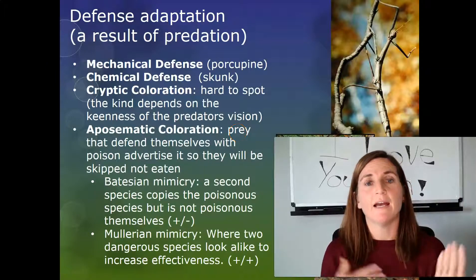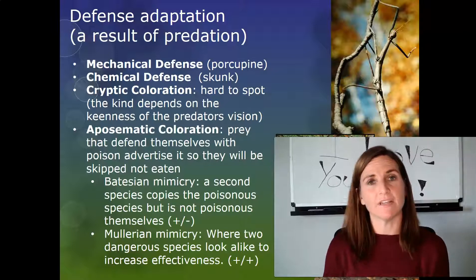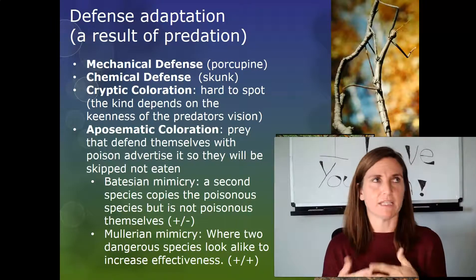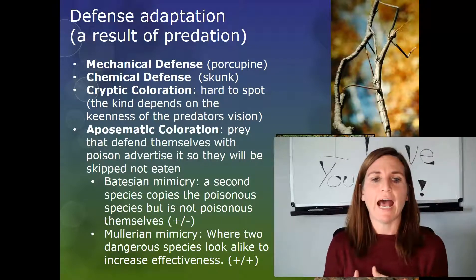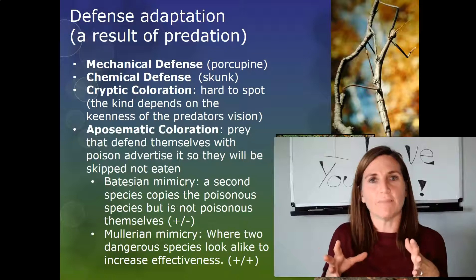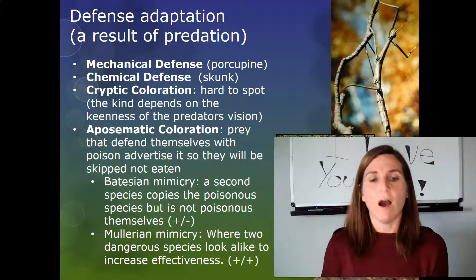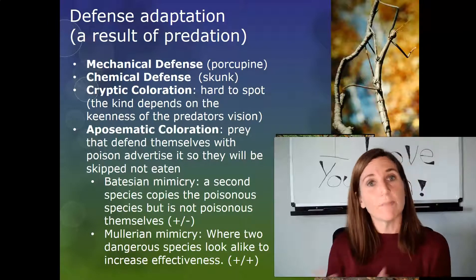Predator and prey locked in co-evolution produce some interesting prey defenses and adaptations. One is a mechanical defense — something like a porcupine, a chuckwalla, or a puffer fish that has a physical way to prevent being eaten. Both puffer fish and chuckwallas can puff up to fill a crack or space, making it hard for a predator to grab them. A porcupine has the defense of its quills.